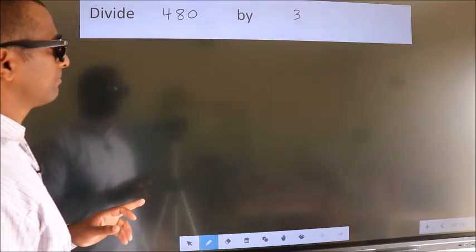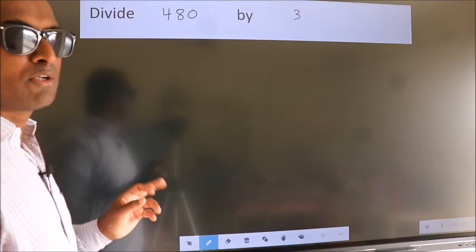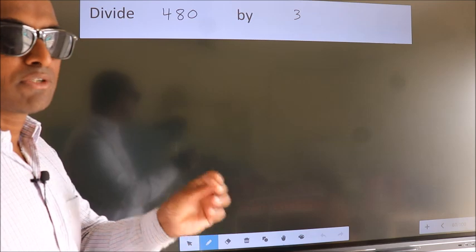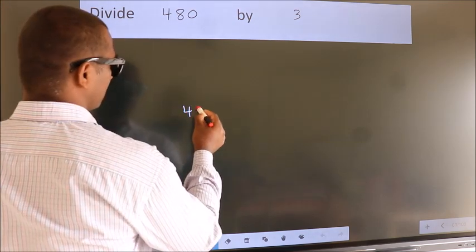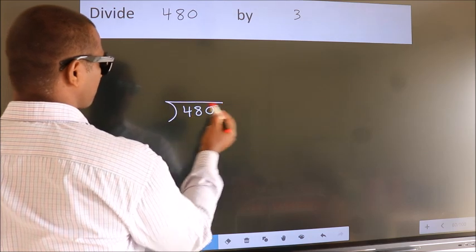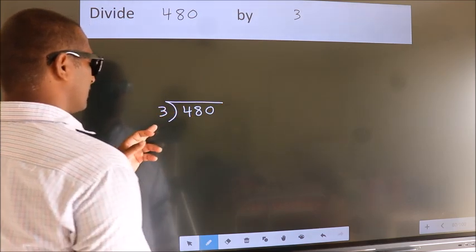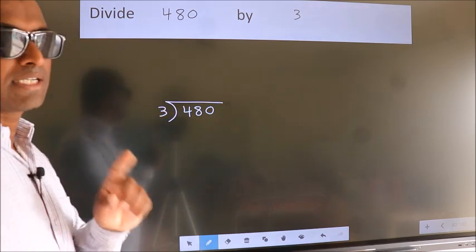Divide 480 by 3. To do this division, we frame it this way: 480 here, 3 here. This is step 1.